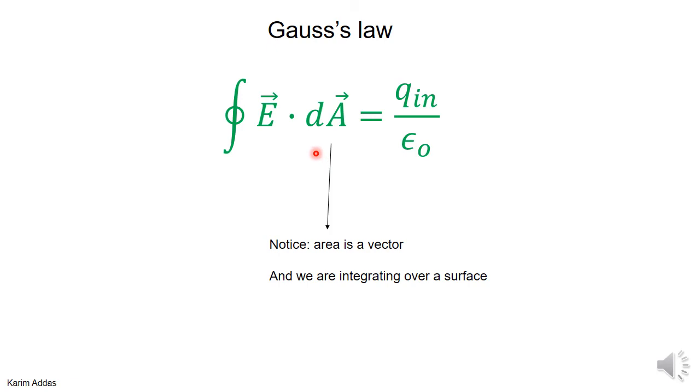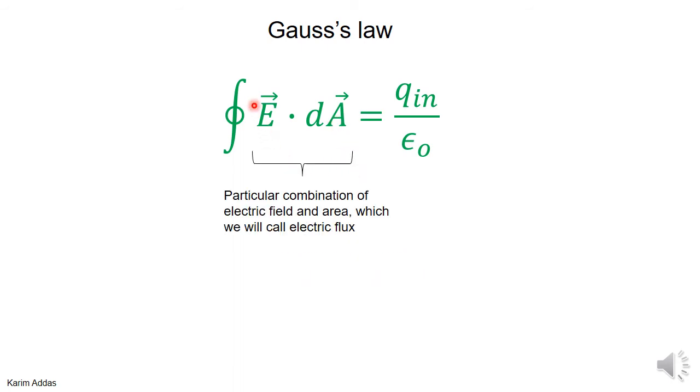One thing to notice about this equation: area has a vector sign on it. This is maybe something strange you haven't seen before, so we'll explain what we mean by area being a vector. Also, the combination of the electric field dotted into area - this combination of terms is called electric flux. We're going to see how to understand it and calculate it for particular problems.